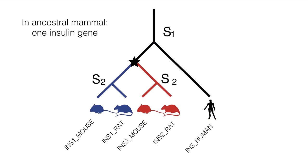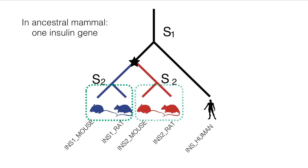Because of the duplication, mice and rats have two insulin genes, suggesting that their common ancestor already had these two copies, so each insulin gene in present-day mouse can be traced back to one or the other copy. This defines two HOGs.